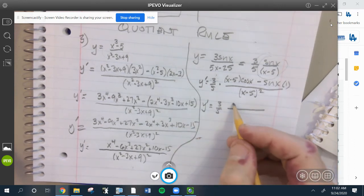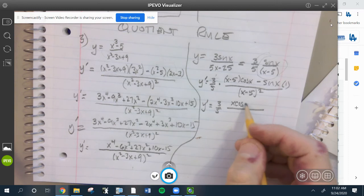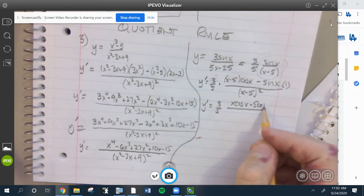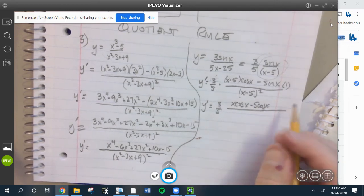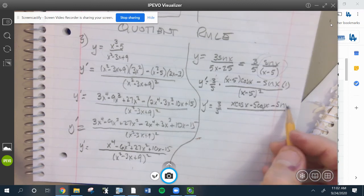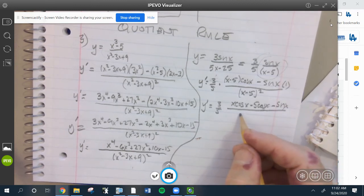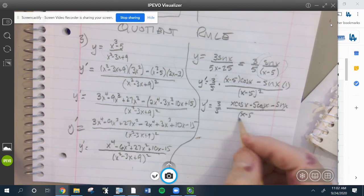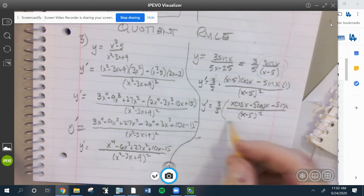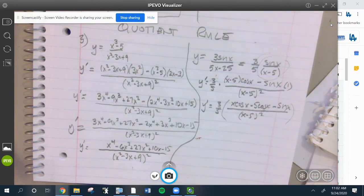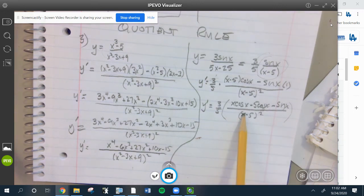I'm going to distribute that cosine, so it's X cosine X minus five cosine X minus sine X. This is pretty good right here. I'm going to clean up a little bit - this would be an okay derivative though.